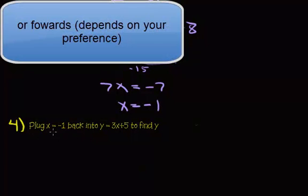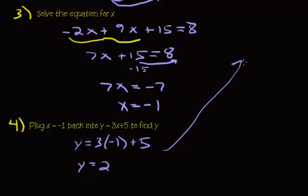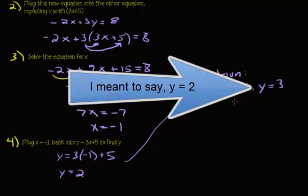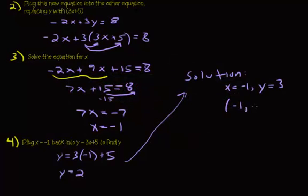Let's plug in x equals negative 1. We get y equals 3 times negative 1 plus 5, and that's going to equal 2. I'll write my solution down. You can write it two ways: x equals negative 1, y equals 2, or as a coordinate pair: negative 1 comma 2.